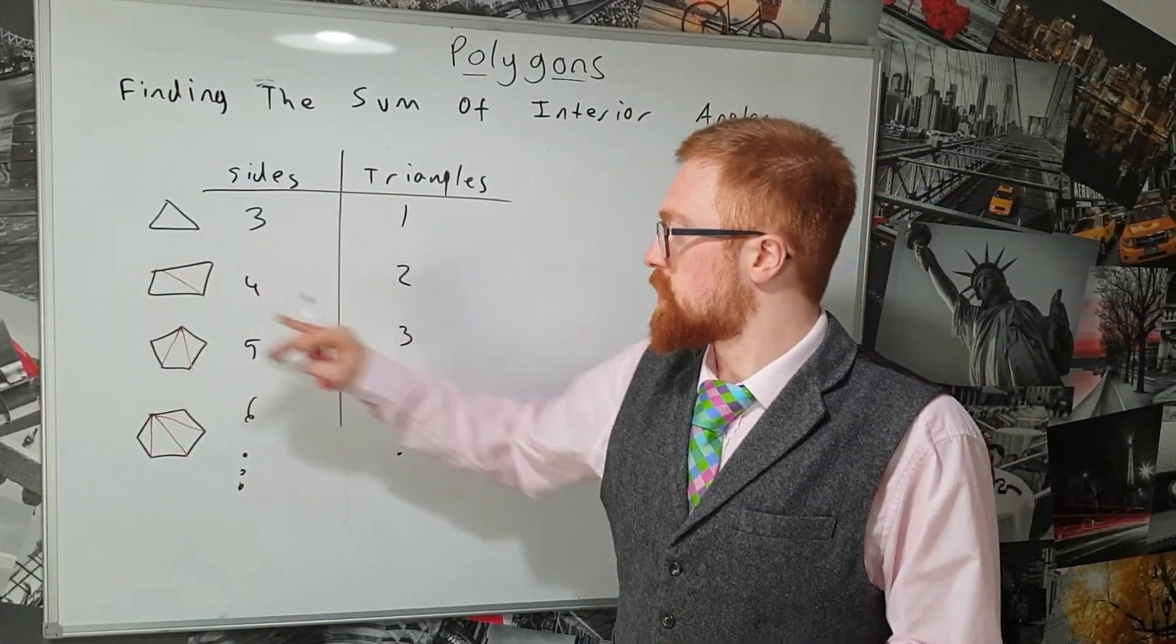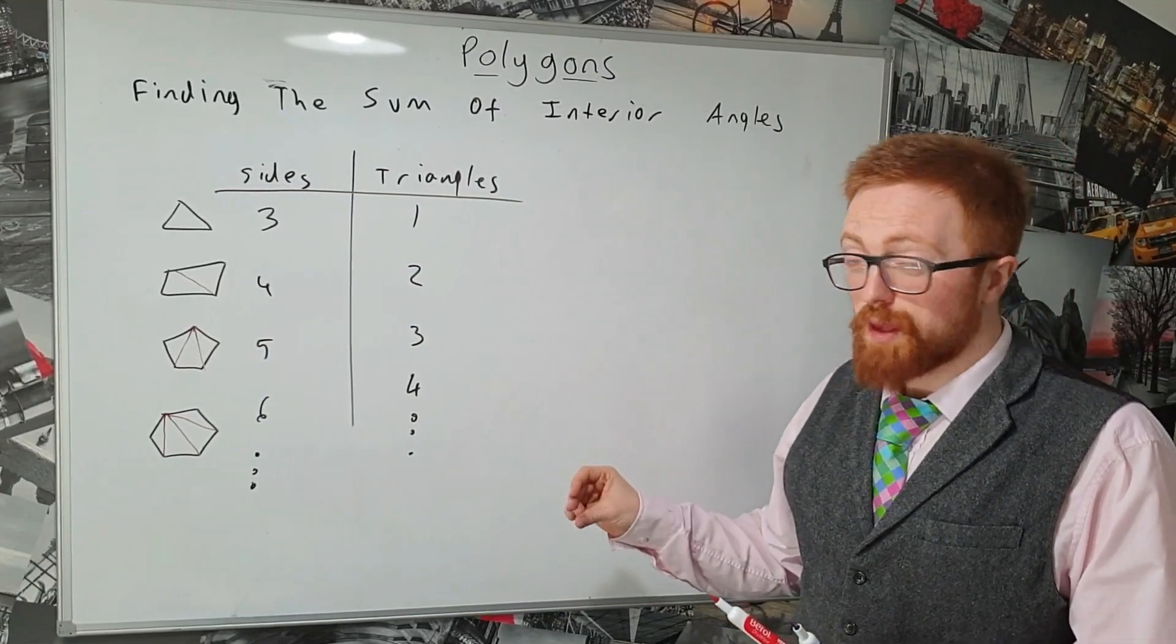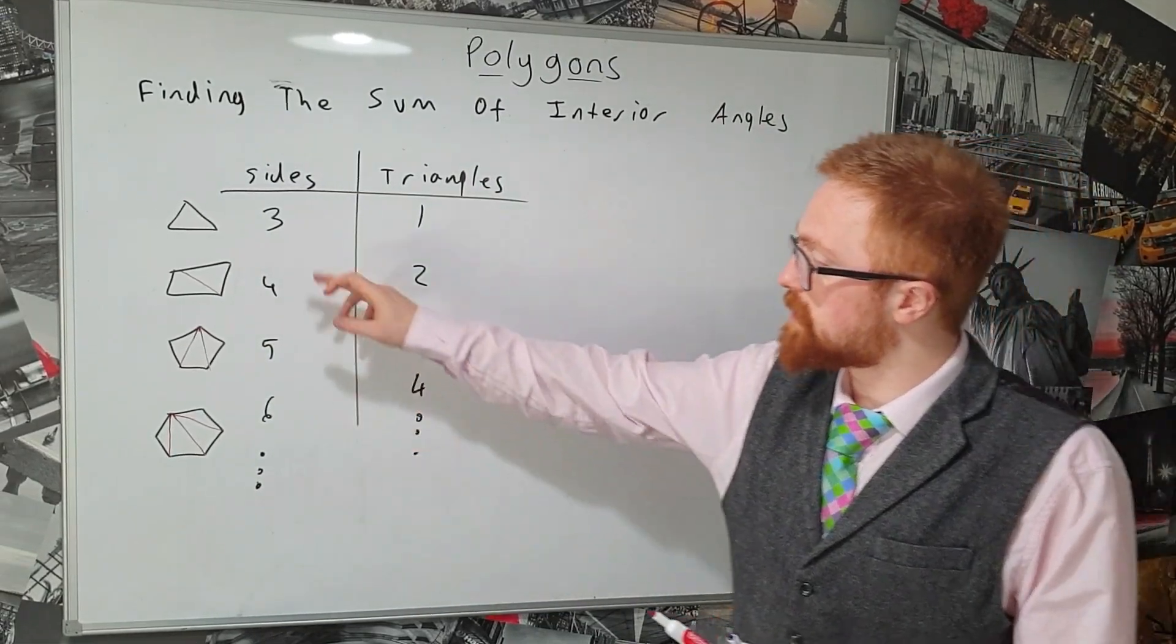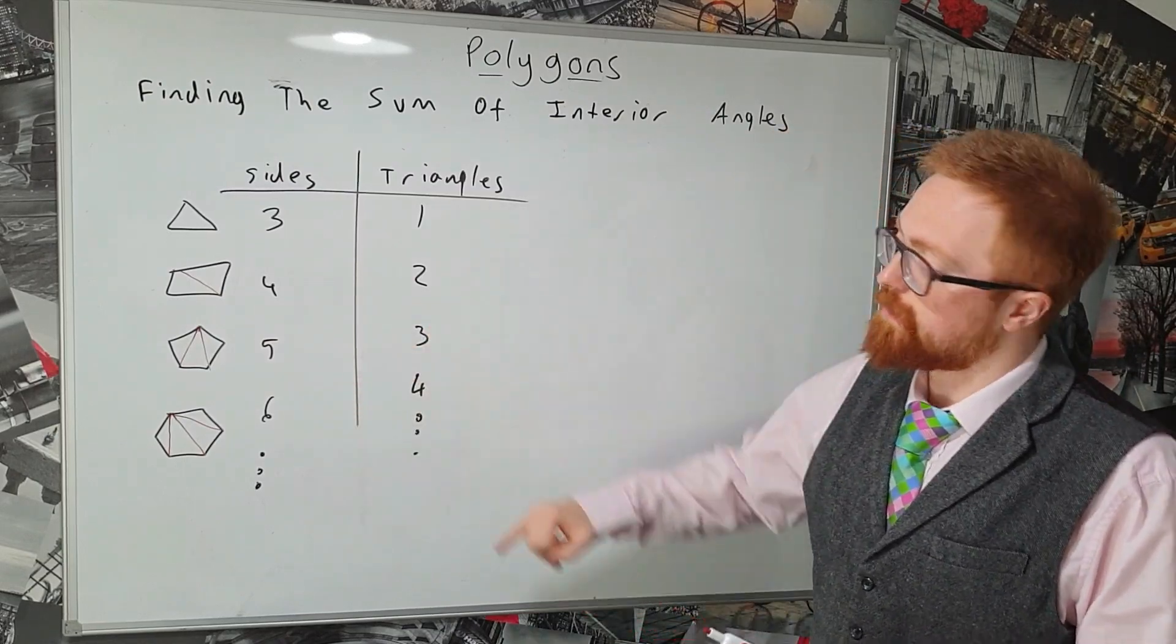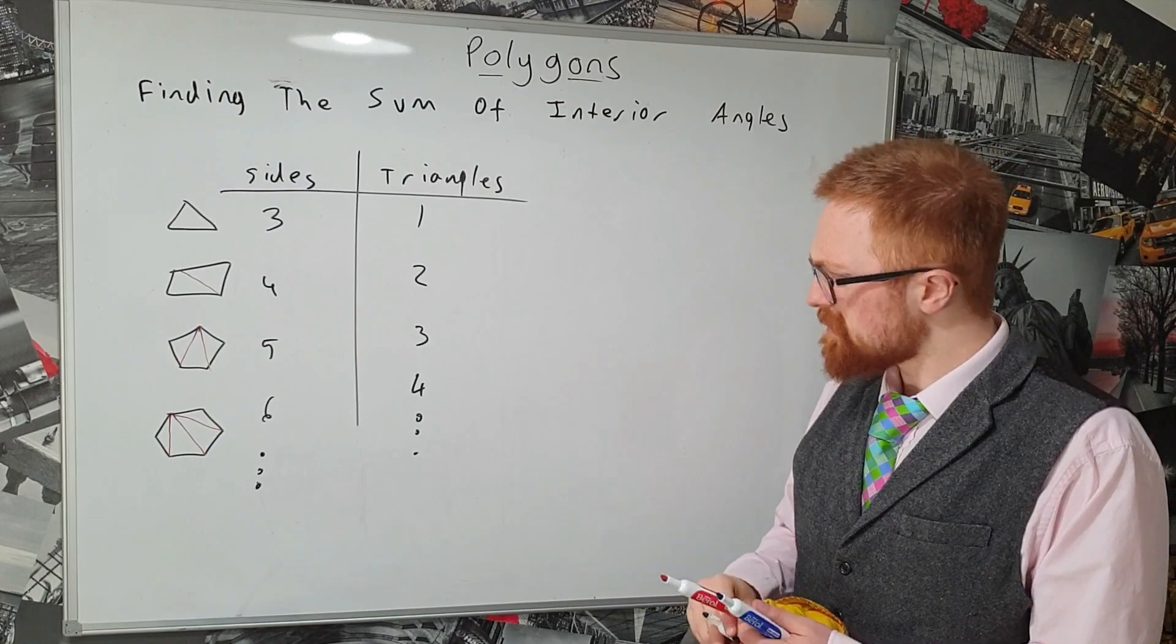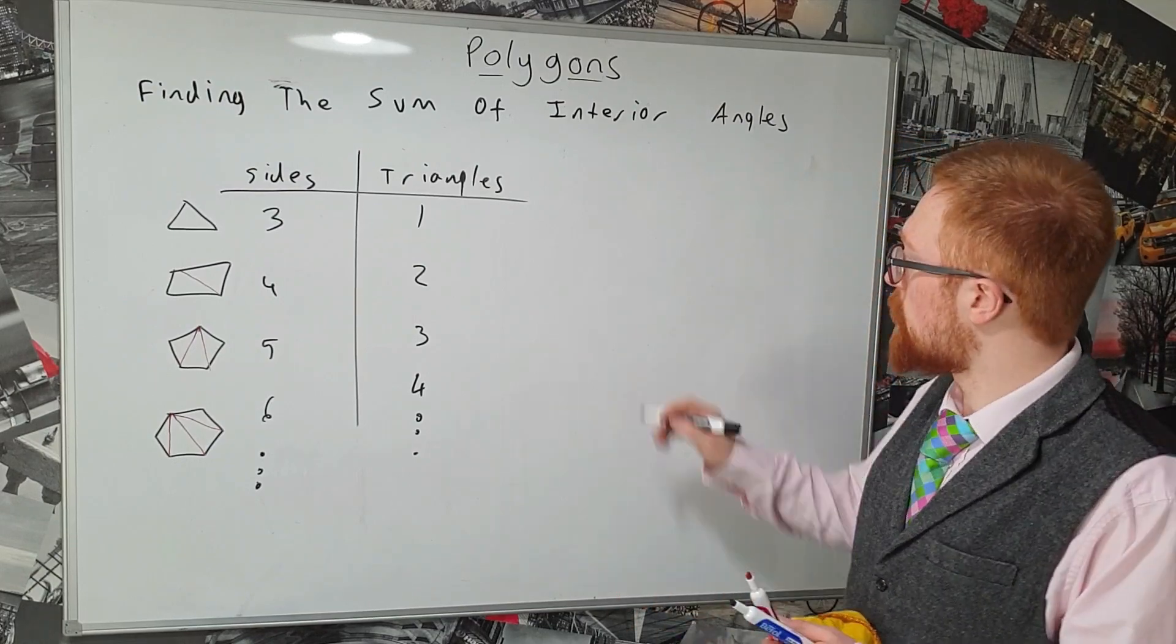A quadrilateral just splits in half, it goes to two triangles. And so I think we can sort of spot a pattern that every time we go up by a side in a polygon, the number of triangles it can be split into increases by one. And let's have a quick look at exactly why this works.